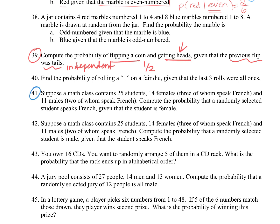For question number 41, suppose that a math class contains 25 students. And the students in there, we have 14 females, three of them speak French. And then we have 11 males, two of whom speak French. We're going to compute the probability that a randomly selected student speaks French, given that the student is female.